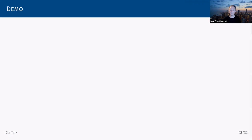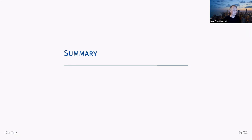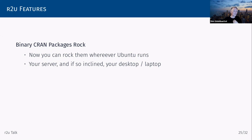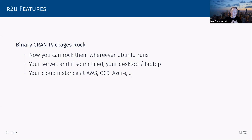To sum up what we have with r2u: binaries really rock. As I showed in the demo, wherever you run Ubuntu you just say install.packages, and 15 seconds later you have something as complicated as tidyverse — which pulls in a total of about 90 CRAN packages and other dependencies. You may be running Ubuntu explicitly on a server, on your desktop or laptop, or in the cloud, or using it at GitHub Actions or another CI system where the runners are based on Ubuntu.